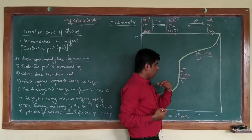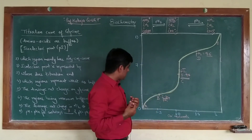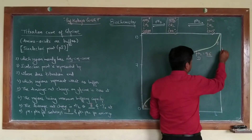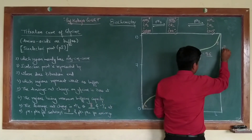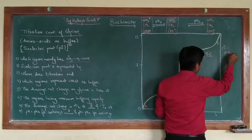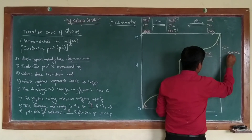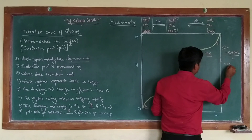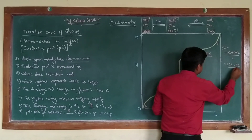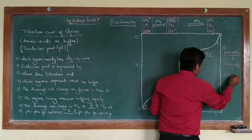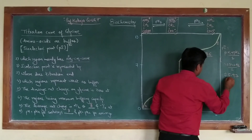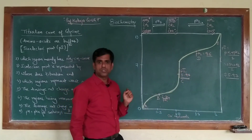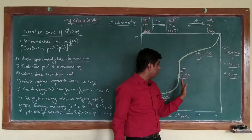The isoelectric point PI can also be calculated arithmetically as the mean of the two pKa values. PI equals pK1 plus pK2 divided by 2, so that is 2.34 plus 9.6 divided by 2, which gives an approximate value of 5.97. So you can arithmetically calculate this particular value of PI.